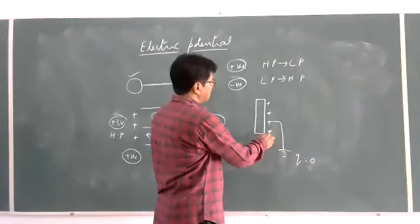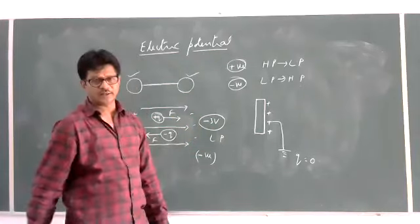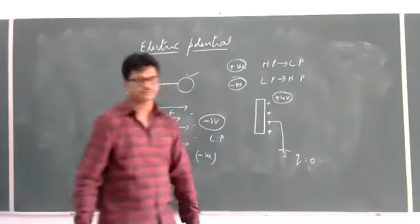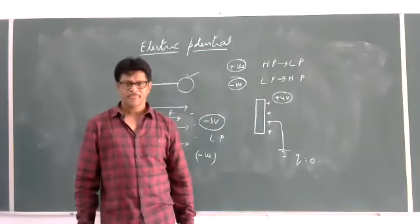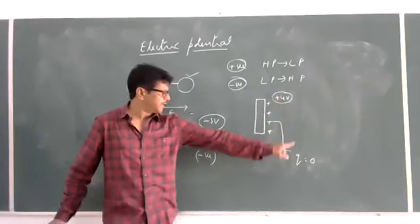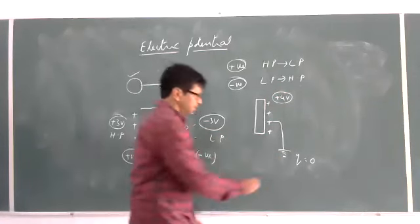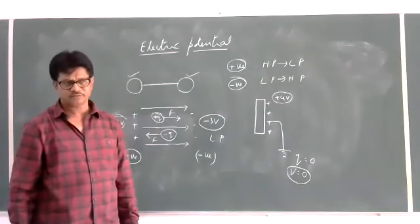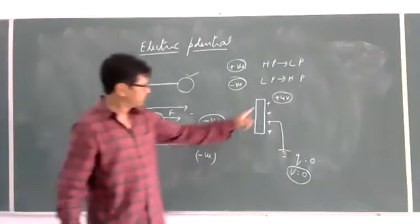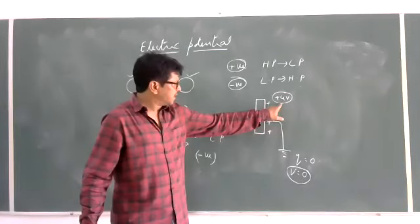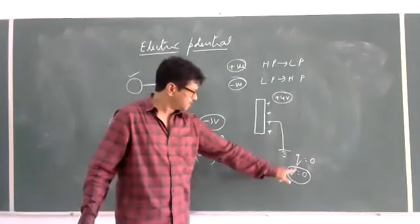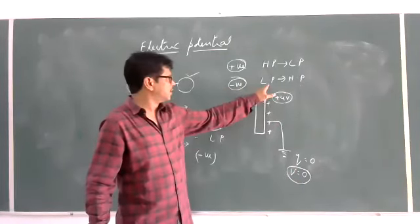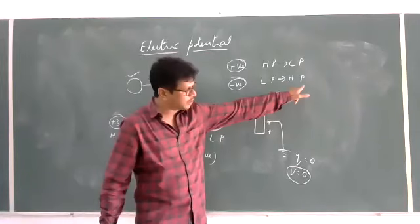Comparing the two: the earth has net charge zero, so its potential is also zero. If I compare +4 volts (higher potential) and 0 volts (lower potential), the negatively charged particles — electrons — will drift from lower potential to higher potential. So the electrons will move from earth to the body, until both attain the same potential.